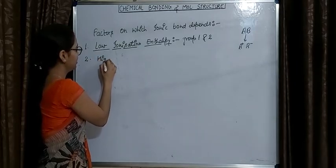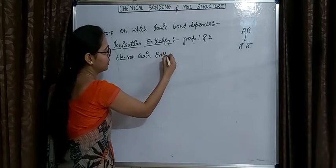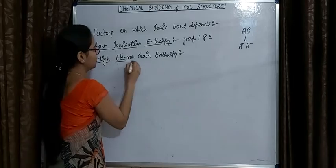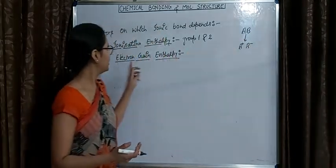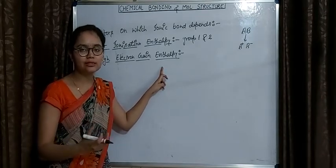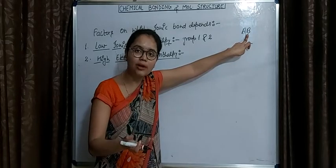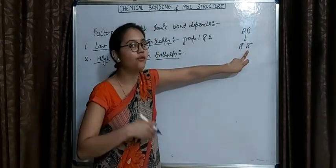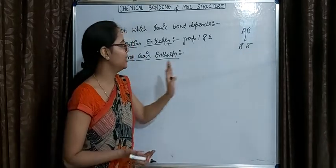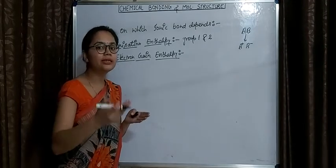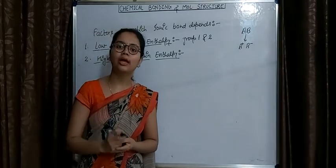The second factor is high electron gain enthalpy. In an ionic compound, the other part must form an anion. Electron gain enthalpy is the enthalpy change when an anion is formed. If it has a high value of electron gain enthalpy, it means it will change into an anion very easily. Similarly, if the anion forms easily, then the ionic bond will form easily. So: greater the value of electron gain enthalpy, greater will be the tendency to form an anion, and greater will be the chance to form an ionic bond.